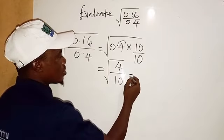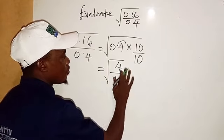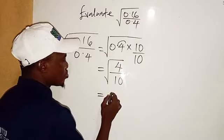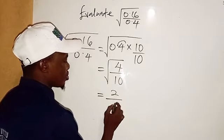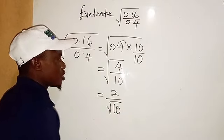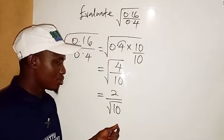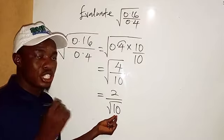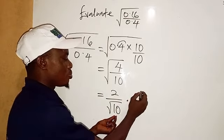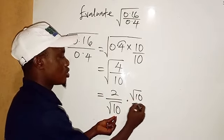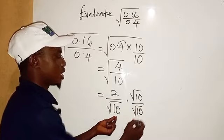From here, what's the square root of 4? The square root of 4 is 2 divided by the square root of 10. Now we cannot leave this answer like this because we need to rationalize because of this surd at the denominator.